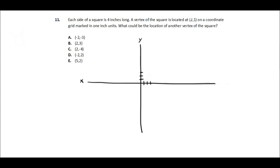Each side of a square is 4 inches long. A vertex of the square is located at 2, 1 on a coordinate grid marked in 1 inch units. What could be the location of another vertex of the square?